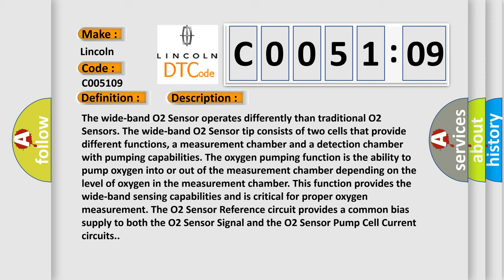The oxygen pumping function is the ability to pump oxygen into or out of the measurement chamber depending on the level of oxygen. This function provides the wideband sensing capabilities and is critical for proper oxygen measurement. The O2 sensor reference circuit provides a common bias supply to both the O2 sensor signal and the O2 sensor pump cell current circuits.